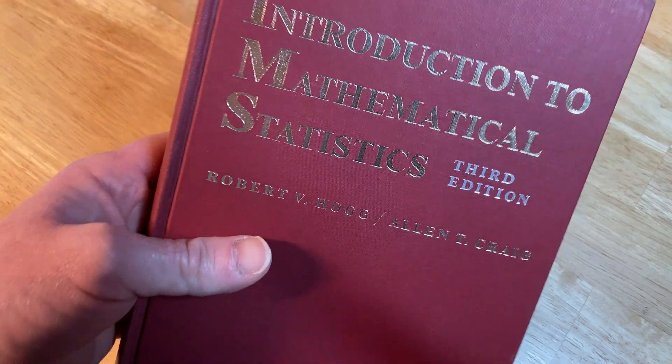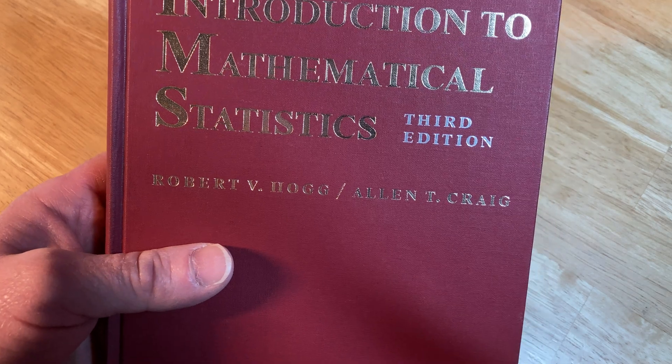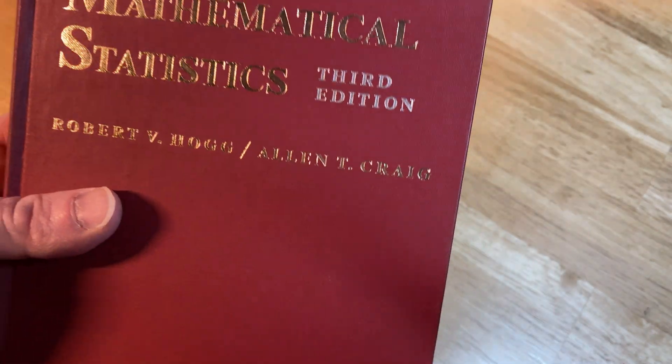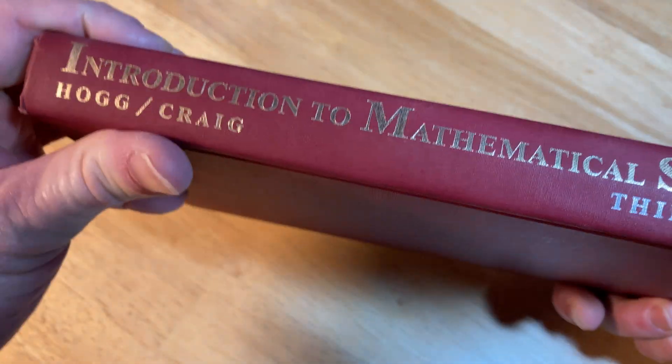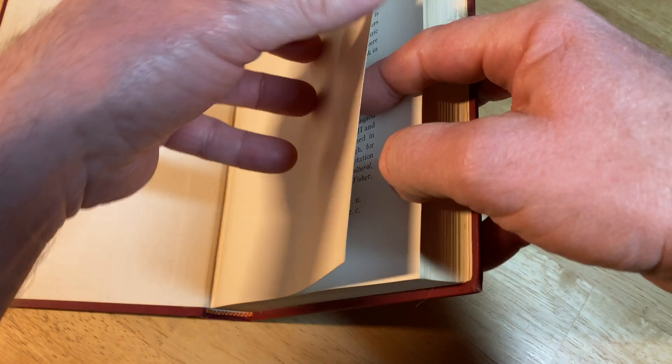Hi, in this video we are going to look at this book. It is called Introduction to Mathematical Statistics, the third edition, by Robert B. Hogg and Alan T. Craig. It's a hardcover. Let's open it up and take a look inside this book.